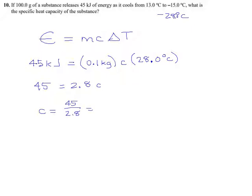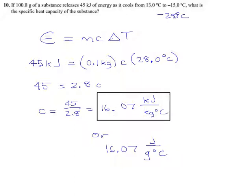45 divided by 2.8 is 16.07 kilojoules per kilogram degrees Celsius. Or, because the units are equivalent, we can also call it 16.07 joules per gram degree Celsius.